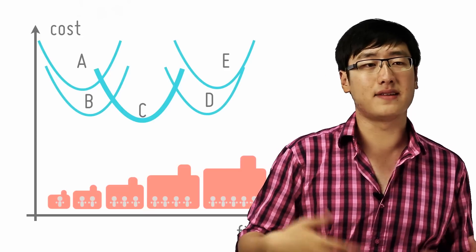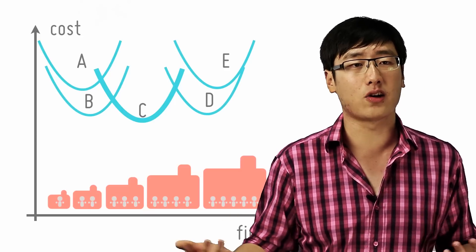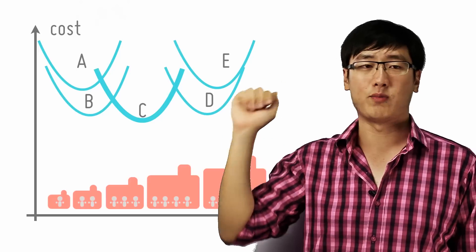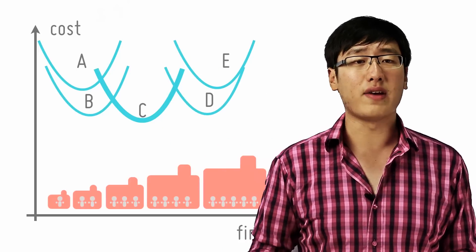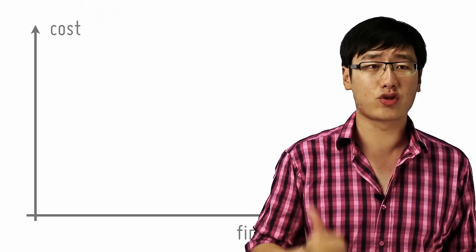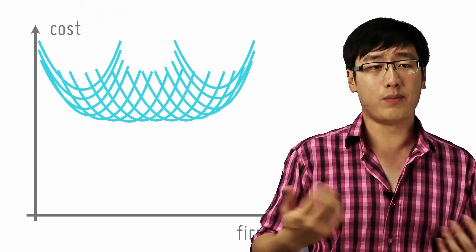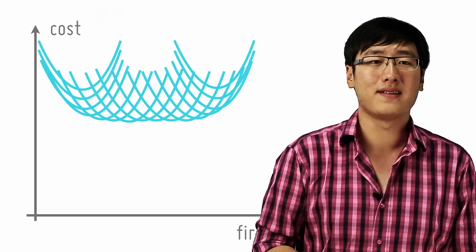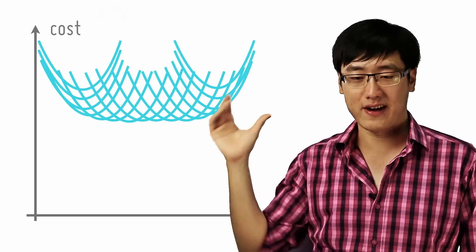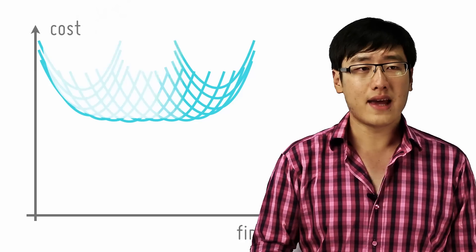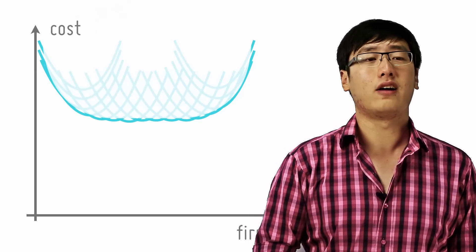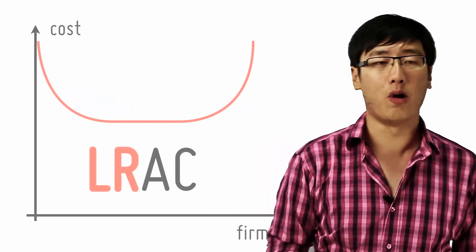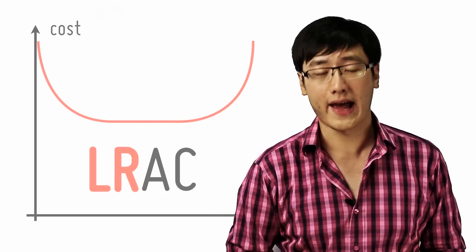The LRAC is hence these regions, because these dictate the cost you will incur if you vary all your factors when you plan. Now imagine if you have an infinite number of choices, which is a more accurate reflection of real life — you can pretty much expand in very small increments. Then your choices will lie along the edges of these SRACs, and the edges of these SRACs form your LRAC.